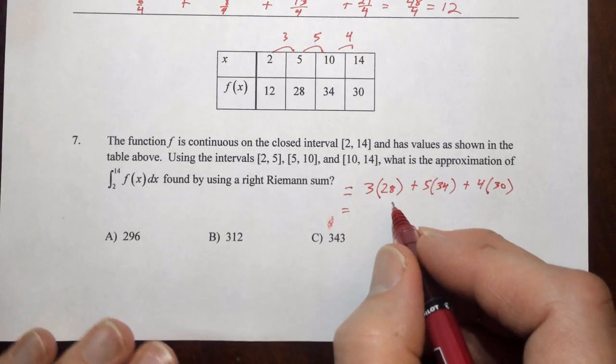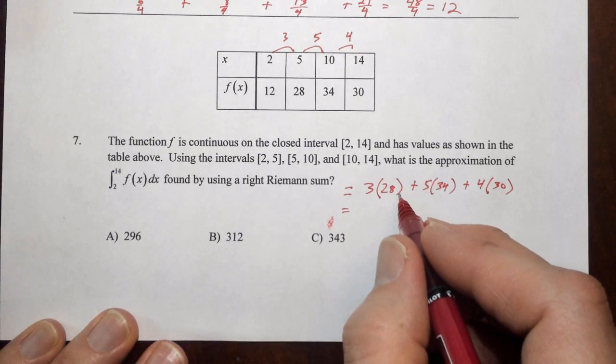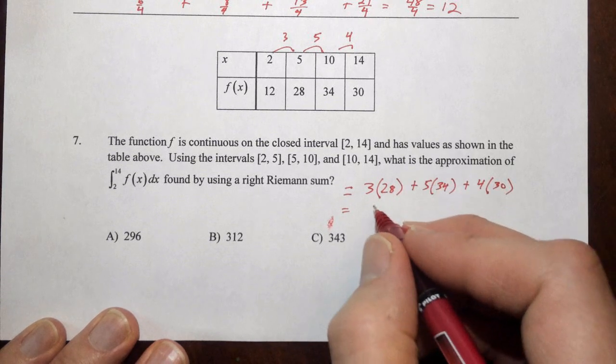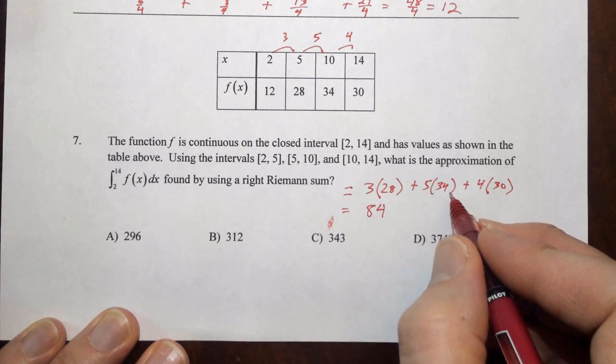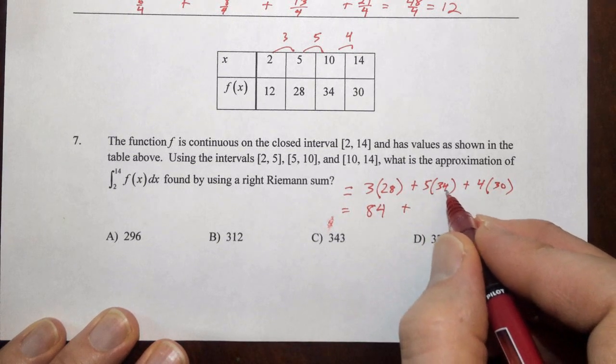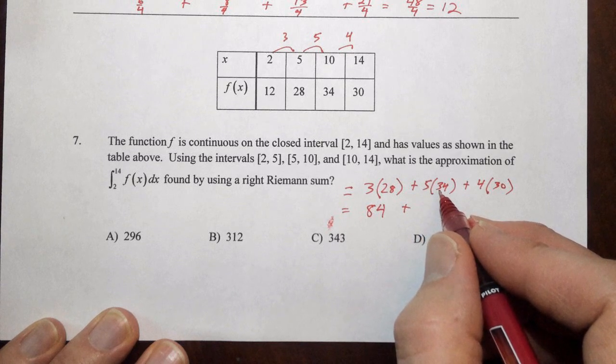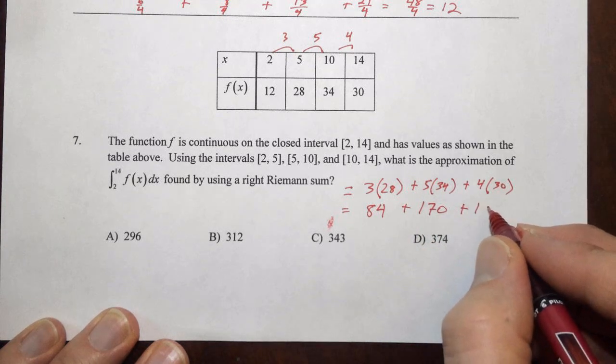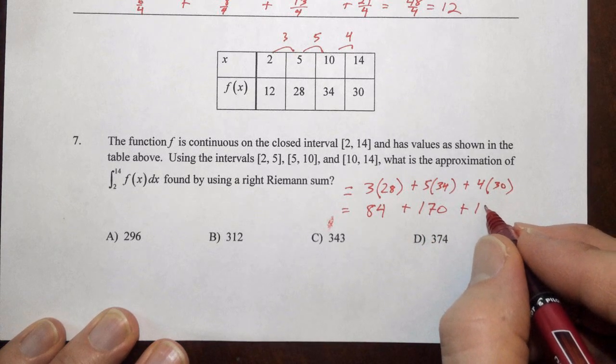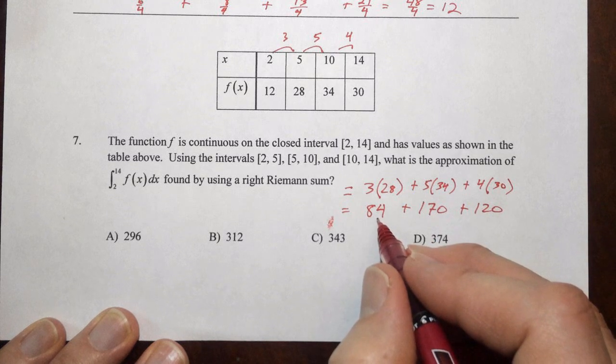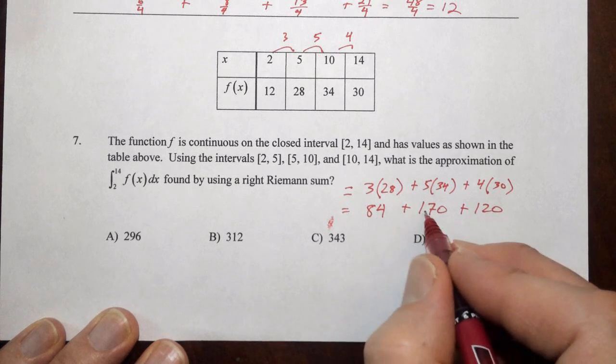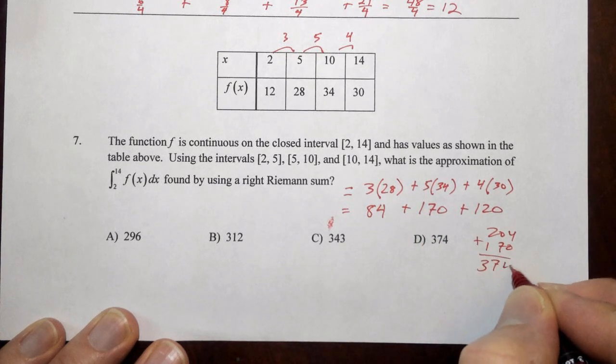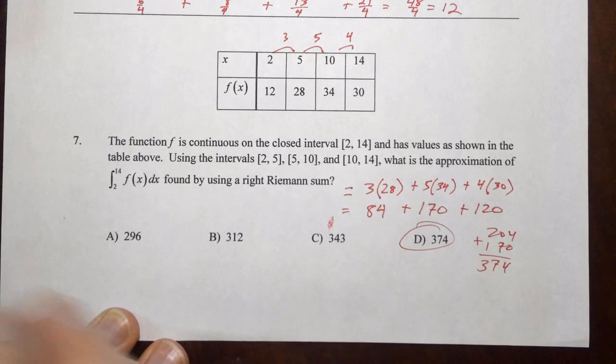So three times twenty-eight, that's three twenties plus three eights, so three twenties is sixty, three-eights is twenty-four, sixty plus twenty-four is eighty-four. We have five times thirty-four, so five times four is twenty, five times thirty is a hundred and fifty. Twenty plus one hundred fifty is a hundred and seventy, and then four times thirty, four times three is twelve, so four times thirty is a hundred and twenty. So 120 plus 84, that's going to be 204, so we have 204 and 170, so we put those together for 374, so our answer is D.